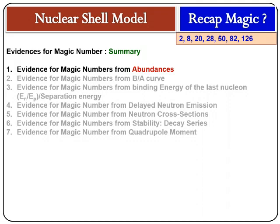This is the summary of the evidences in favor of magic numbers. The first evidence came from the abundances of nuclides — we found that certain nuclides are more abundant than others. The second evidence came from the binding energy per nucleon curve, where peaks occur when N or Z equals a magic number. Then we studied the separation energy of the last nucleon and found it is extraordinarily high when N or Z equals a magic number.